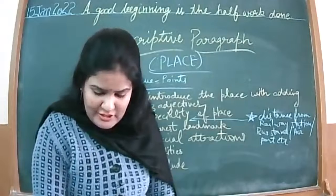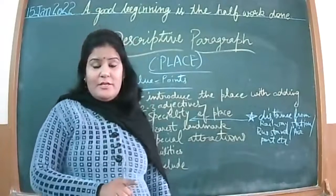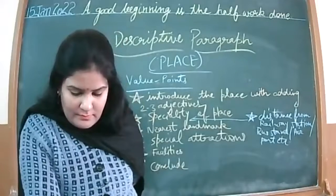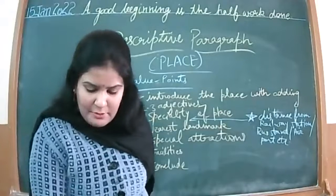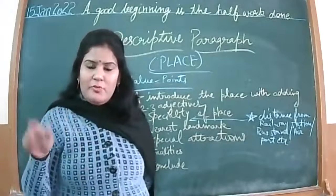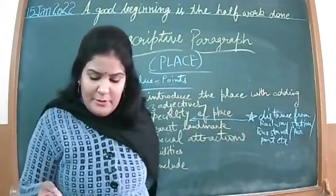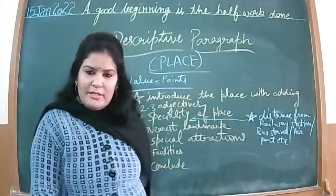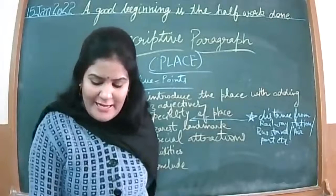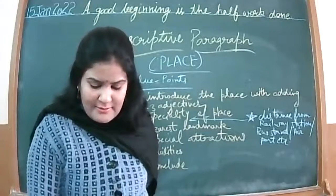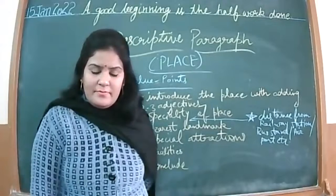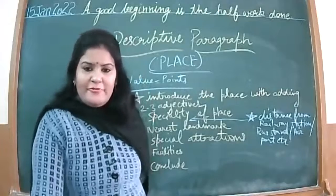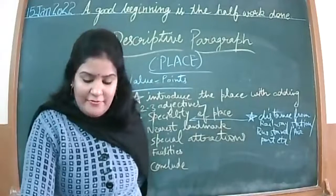Hints are given in the statement also. Now some value points I'm giving you - you will develop upon them. Scenic beauty. Snow clad mountains - that is mentioned in your statement itself. Snow clad - S-C-L-A-D. Snow clad mountains. Beautiful lakes. Famous for dry fruits.